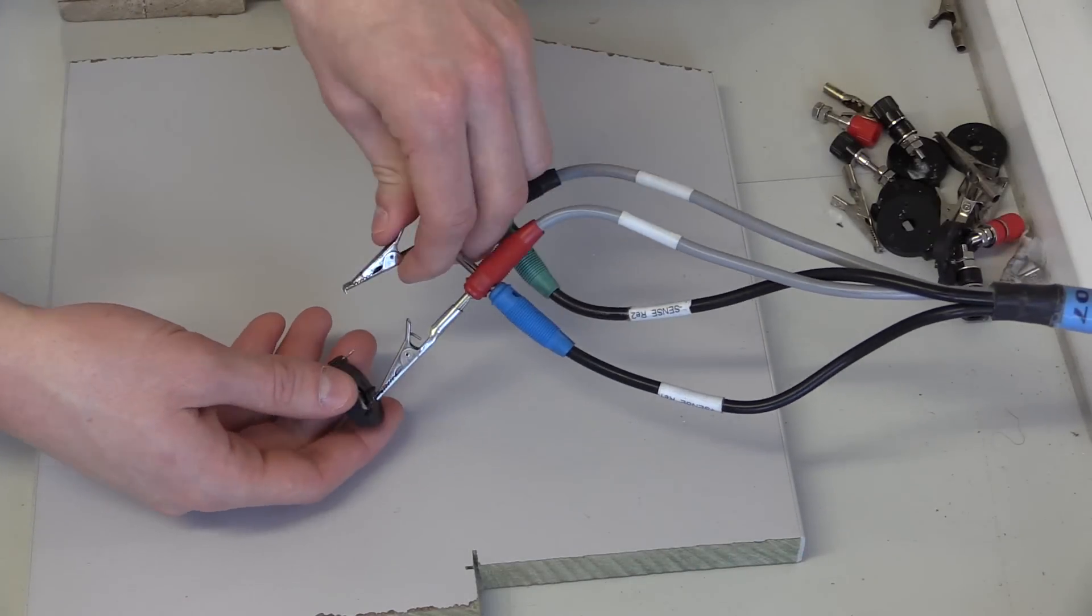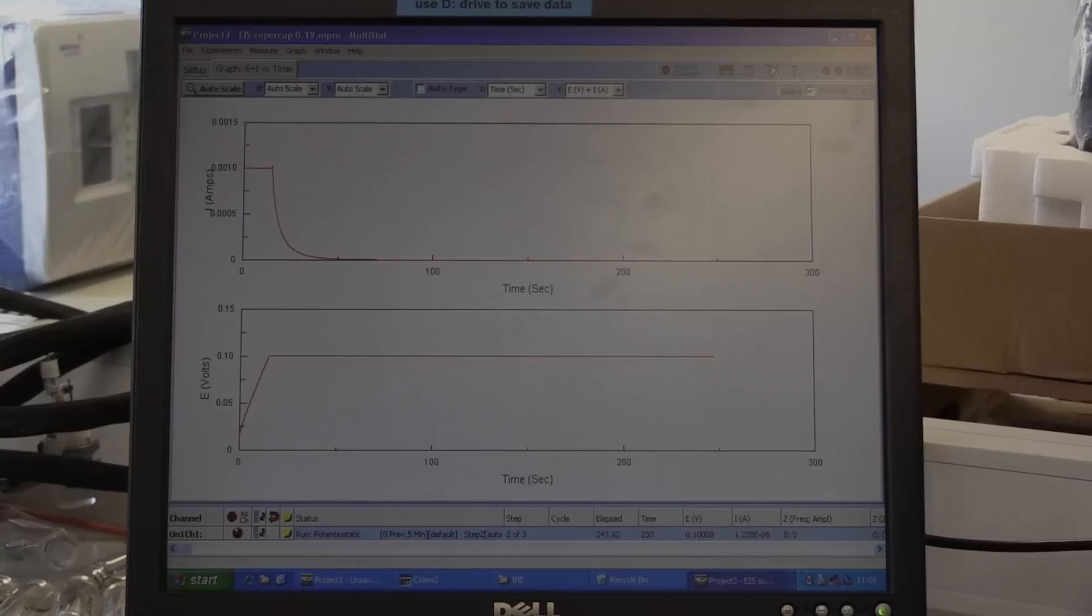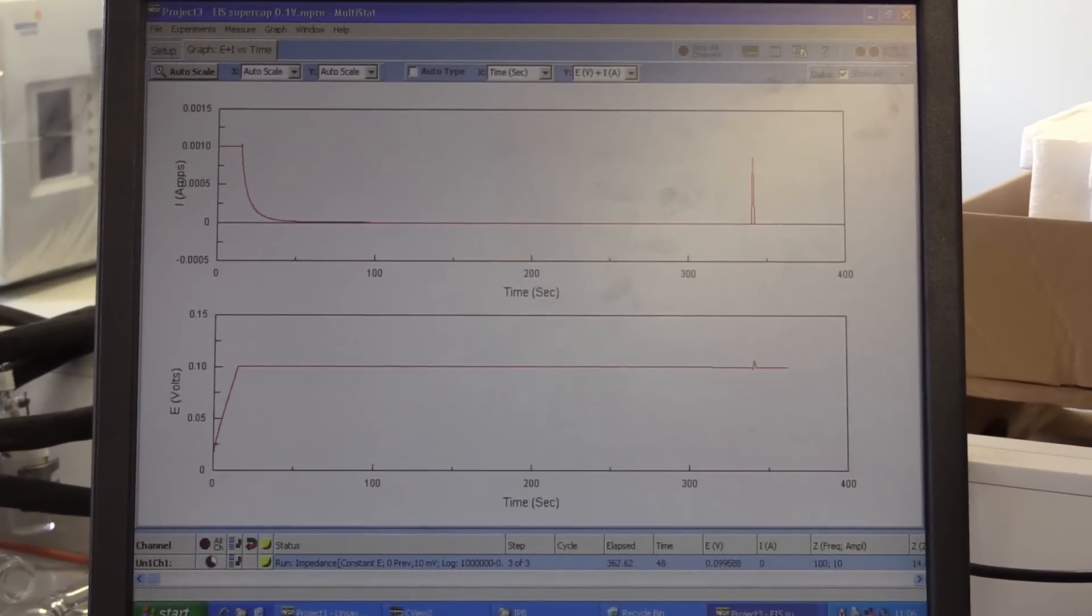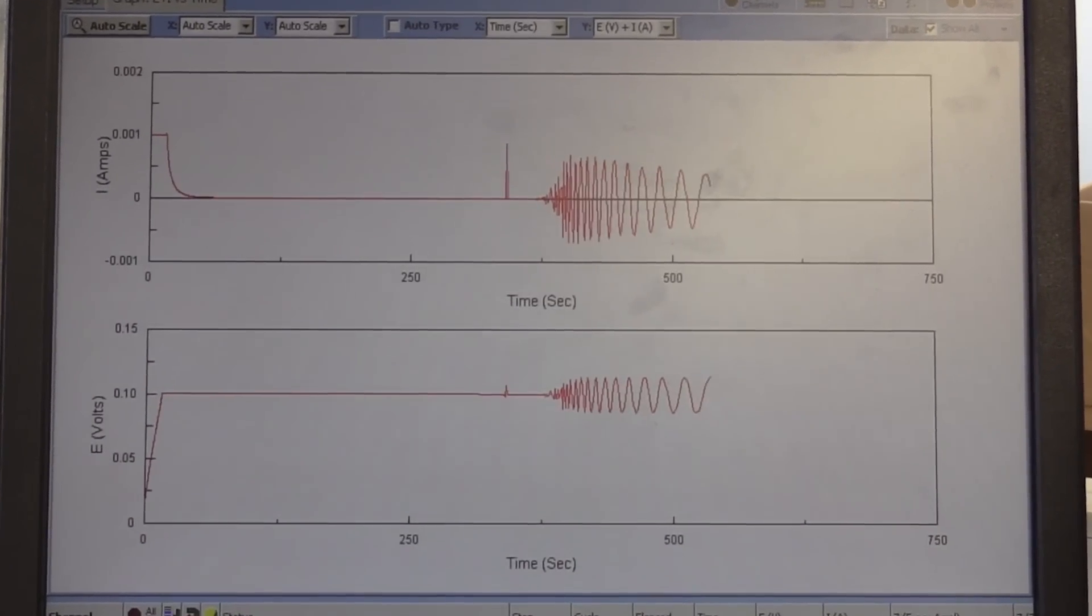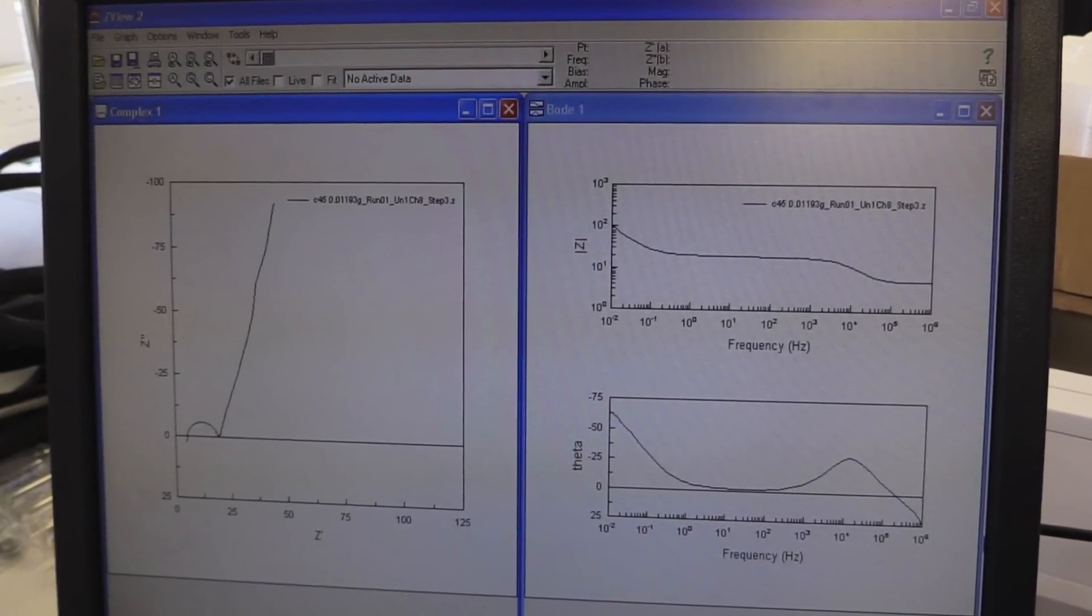The second machine, from Solartron, uses electrochemical impedance spectroscopy. This applies the sinusoidal change in voltage and analyses the current output. This determines the magnitude of the real and imaginary parts of the impedance to give the contributions of different types of the cell impedance to the total.